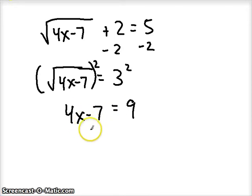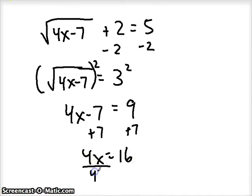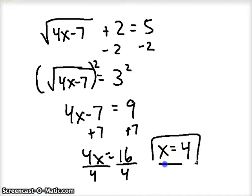Keep undoing things around x, add 7. So 4x equals 16. And get rid of that multiplication by 4 by dividing by 4. And we get x is 4.